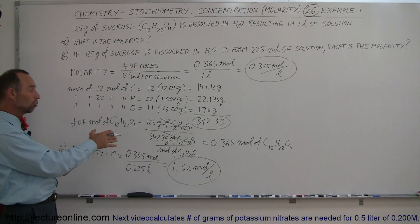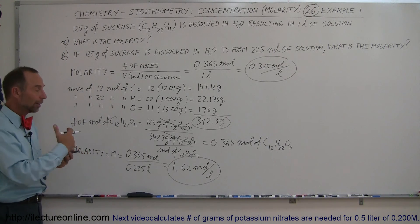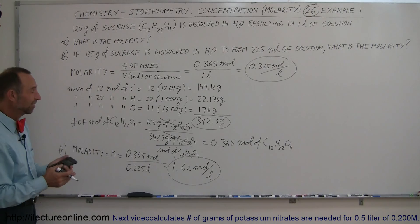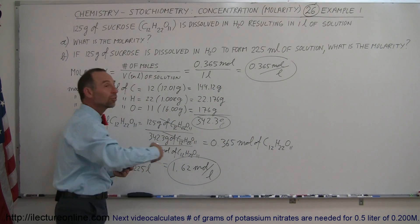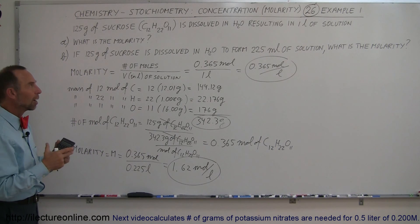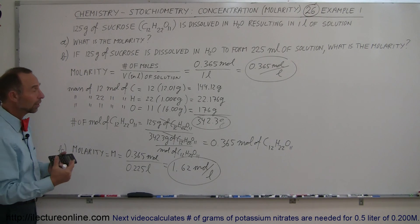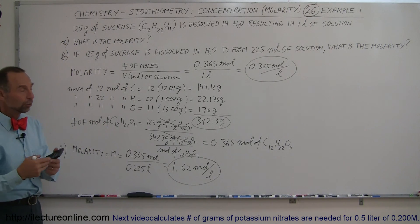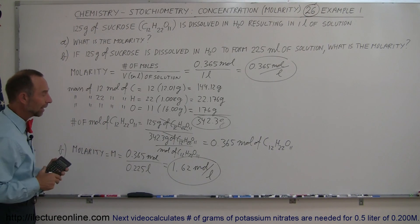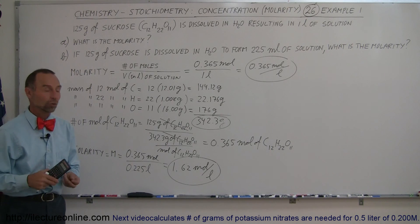Since we put in a smaller amount, only this much, you can see then the concentration would be much higher. And that's how we find the concentration, or the molarity, by dissolving some sort of solute in water to end up with a solution that we can then indicate the concentration or molarity of.